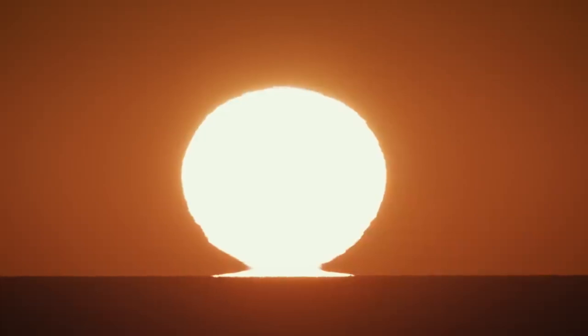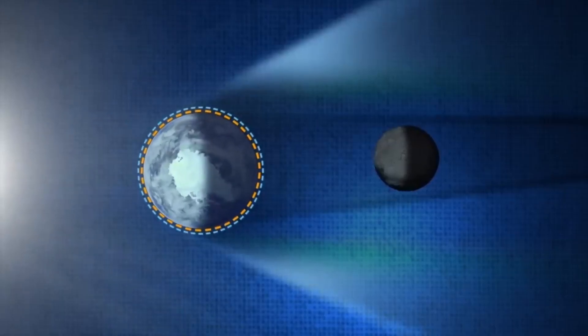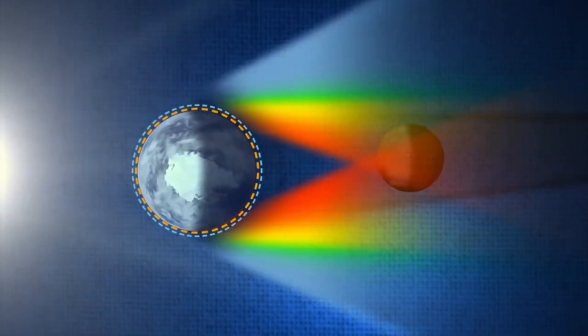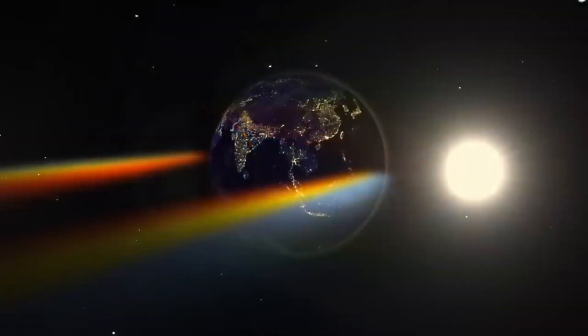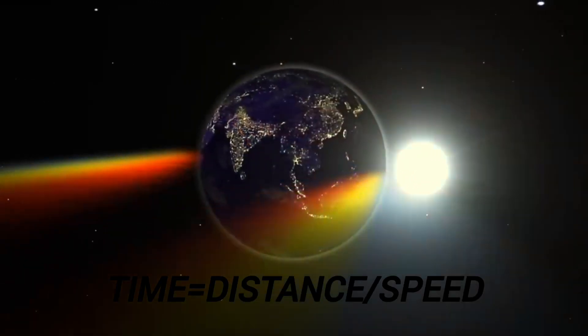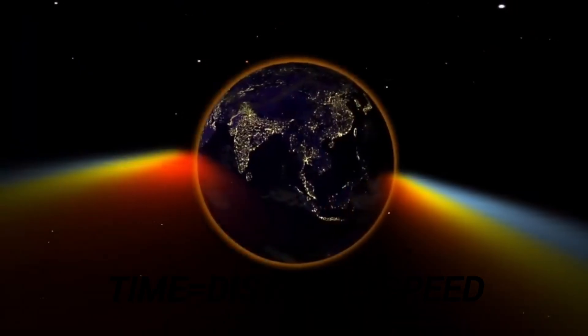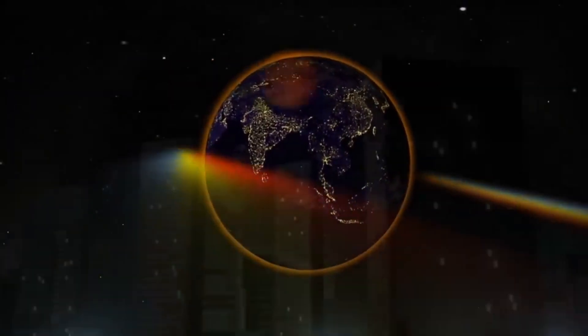Mathematics also helps us calculate how long an eclipse will last. The moon travels around earth at a speed of about 1 kilometer per second. Using the formula time equals distance divided by speed, astronomers can predict the duration of each eclipse.